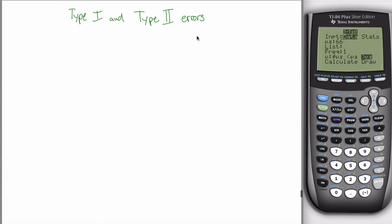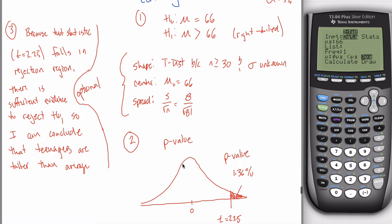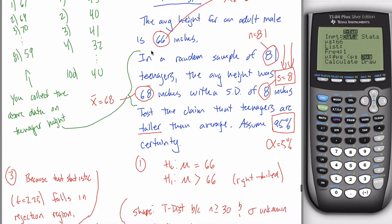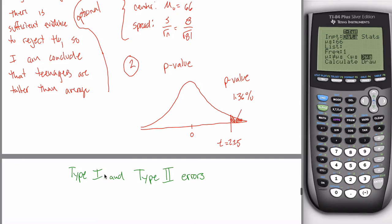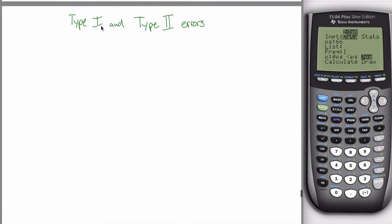In this video I want to talk about type 1 and type 2 errors. These relate to hypothesis testing. I typically wait until I teach t-tests to introduce these errors, but really there's nothing specific about t-tests you need for them. These are relevant when we talk about z-tests or one-proportion z-tests — any type of hypothesis testing. I put it off because when you first learn hypothesis testing you're typically pretty overwhelmed; there's so much information.